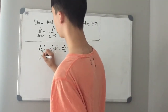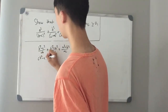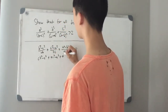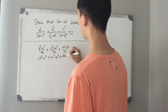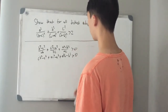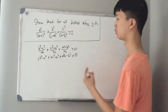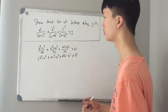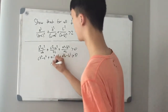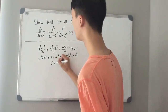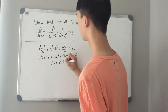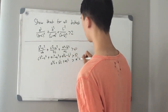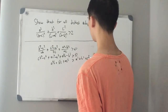Setting a common denominator gives cb² − c³ + ac² − a³ + a²b − b³ > 0. Since a, b, and c are positive, we multiply both sides by abc to get the same equation. Moving all the cubes to one side gives a²b + b²c + ac² > a³ + b³ + c³.